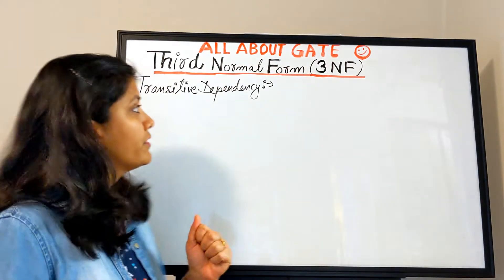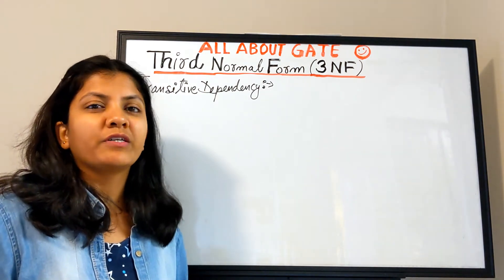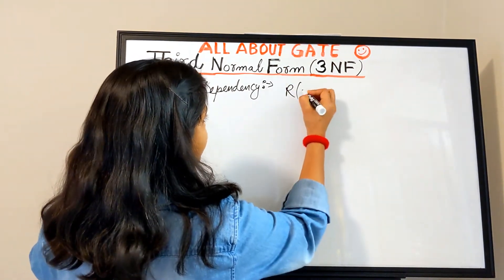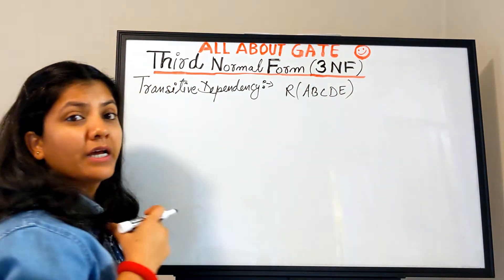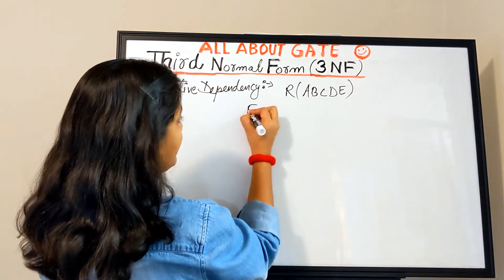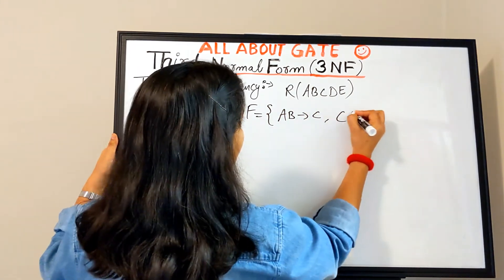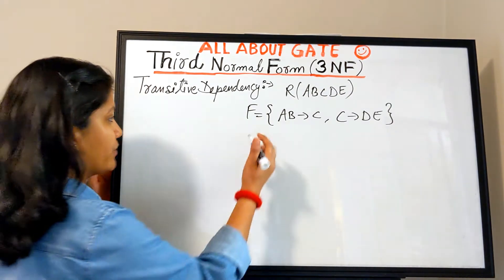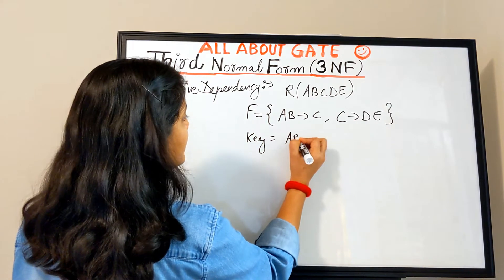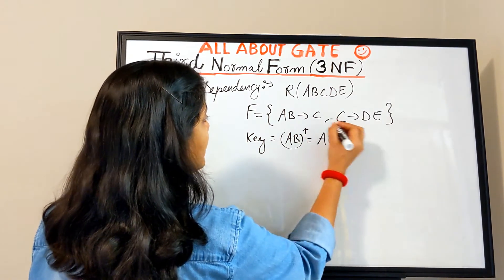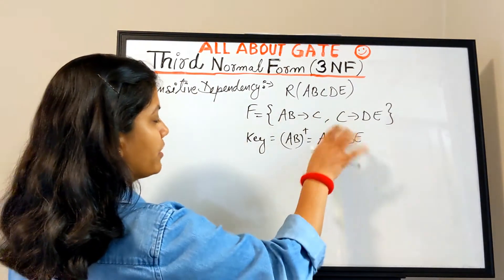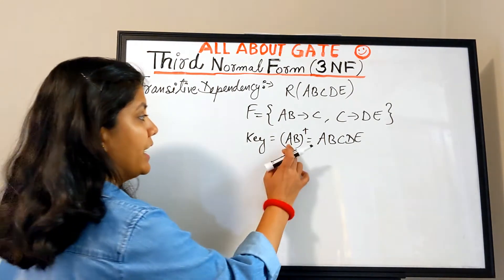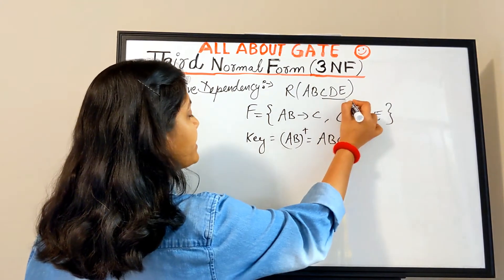Let's take a small example. Assume we have a relation R with attributes A, B, C, D, E. The functional dependencies given are: AB → C and C → DE. Let's find the key. Computing AB⁺: AB gives us C, then C gives us D and E, so AB⁺ = ABCDE. This is the only key, so A and B are prime attributes and C, D, E are non-prime attributes.